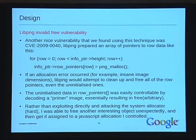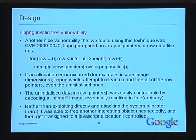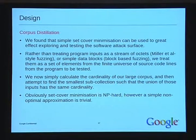Rather than attacking the system allocator, all I really had to do was find an interesting object I could locate in my address space, free it, and then try to assign it to a buffer I controlled — like I did in JavaScript. Then I controlled a buffer that wasn't expected to be freed at that point — game over. Lots of web browsers and other PNG clients were affected by this.